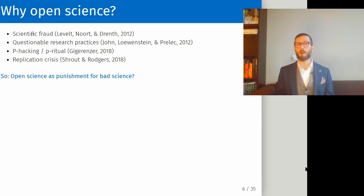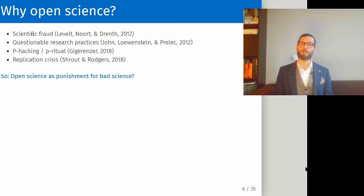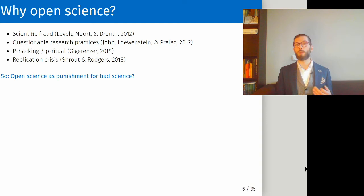Open science practices make people aware of questionable research practices and also prevent them from occurring. The third point is p-hacking, or the p-ritual, a term coined by Gigerenzer — the idea that the only findings worth discussing are ones with significant p-values. This is not true; it is equally informative to find that a hypothesis is not supported. The fourth point is the so-called replication crisis: the concern that as many as 70% of findings in psychology cannot be replicated by independent researchers, suggesting our literature may be permeated with spurious findings.